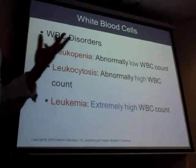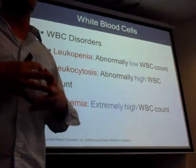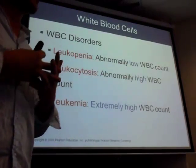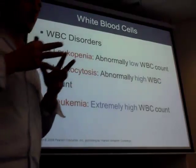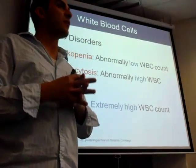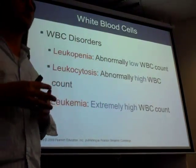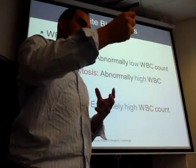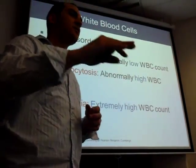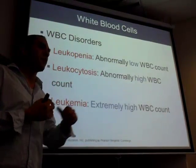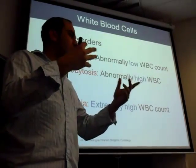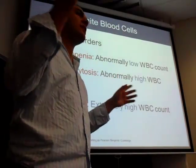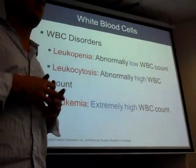HIV specifically kills one of your lymphocytes — T cells, and more specifically T helper cells. When T helper cells get so low, you're in a state of leukopenia, making you susceptible to infections. Whatever comes along — the flu, strep — can kill someone because you have very few white blood cells.